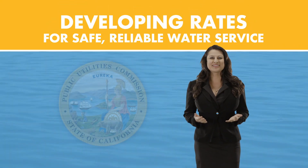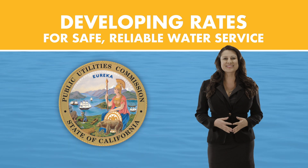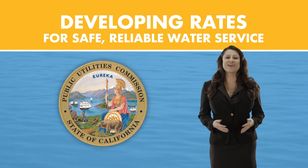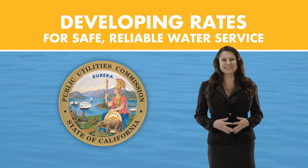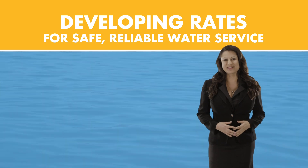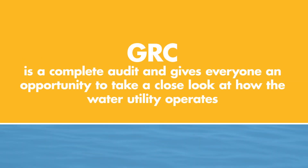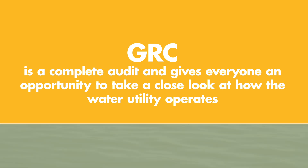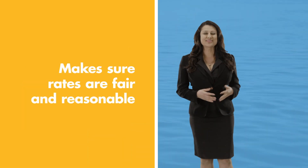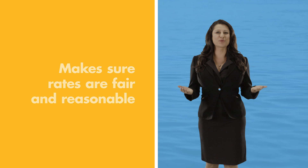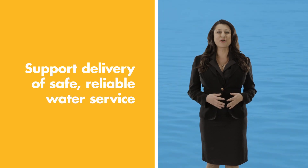Every three years the State Public Utilities Commission is required by law to conduct a detailed review of the rates and costs of the largest regulated water utilities and then to make any needed adjustments. The process is called a General Rate Case or GRC. The GRC is basically a complete audit and it gives everyone an opportunity to take a close look at how a utility operates and to make sure rates are fair and reasonable and can support the delivery of safe, high quality, reliable water service. Let's take a look at the GRC process and how you can be involved.